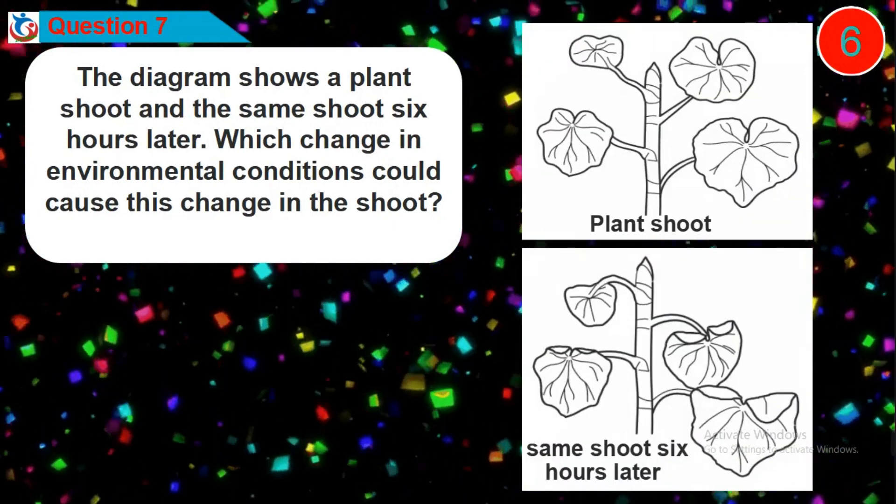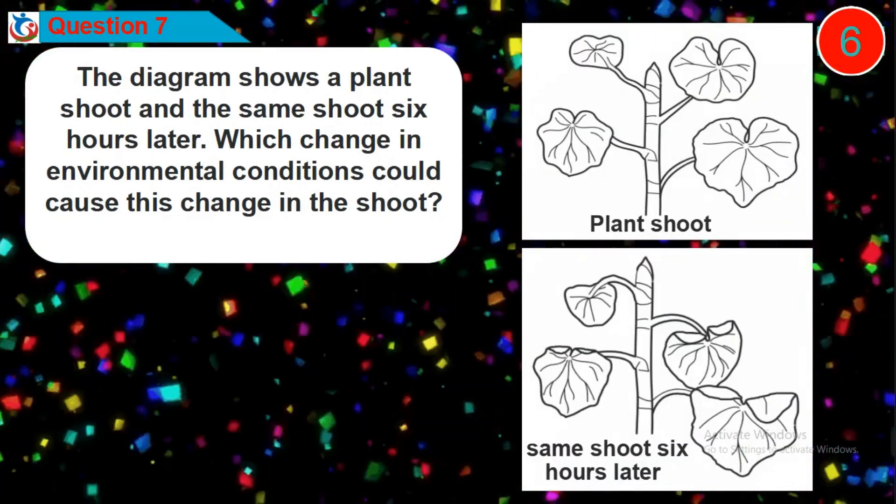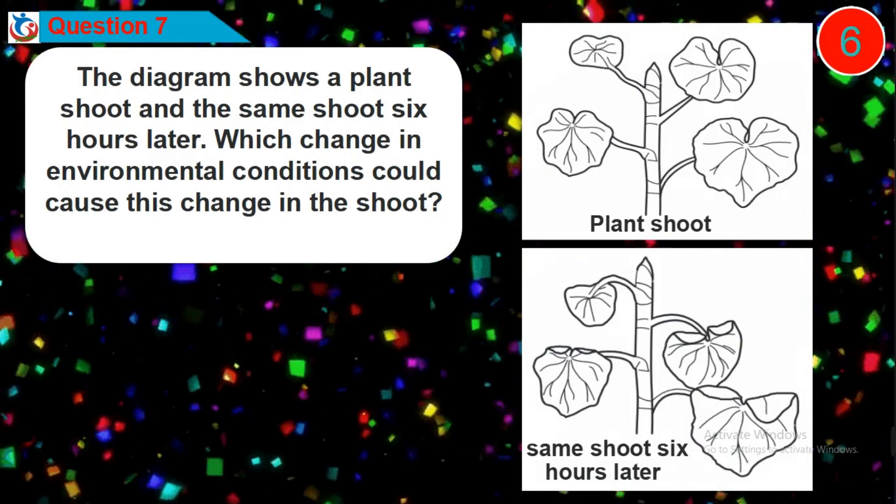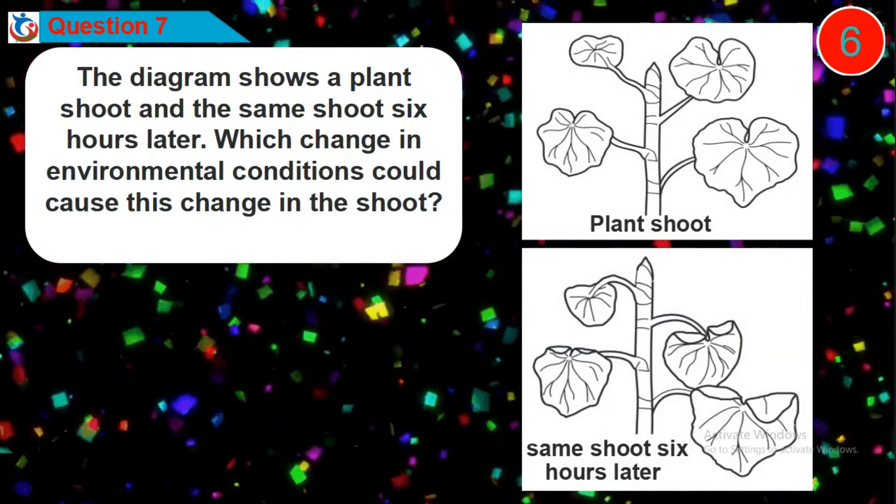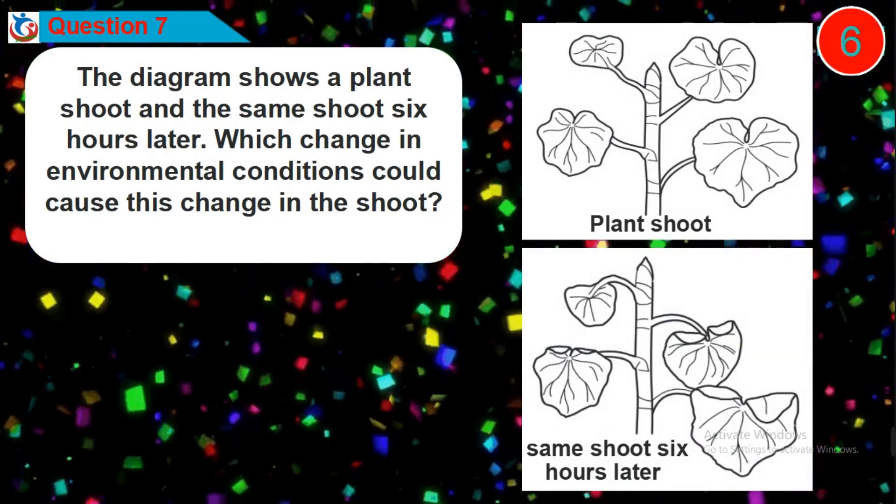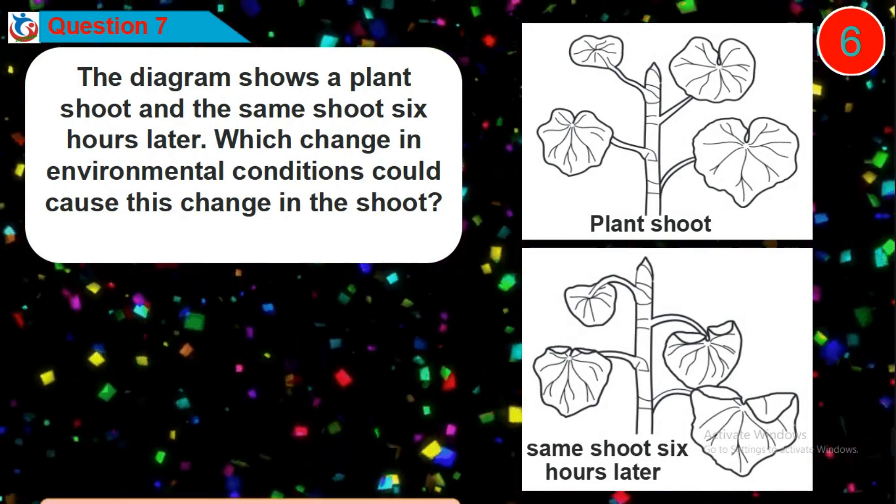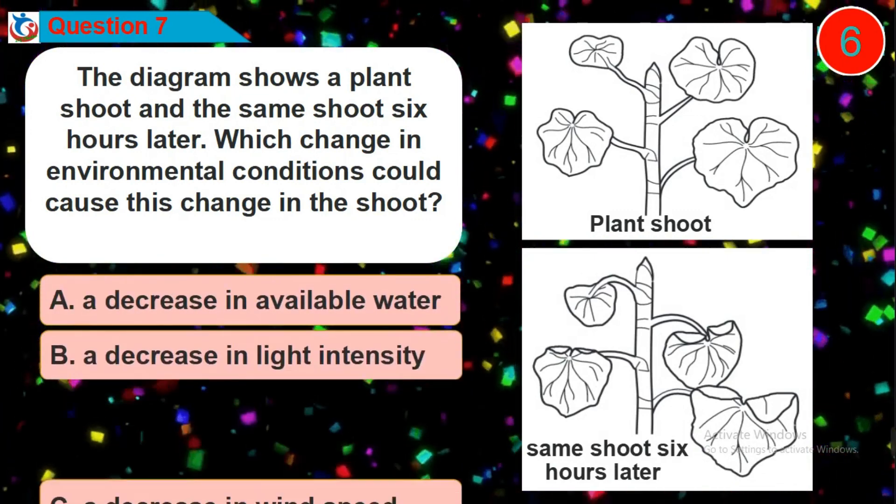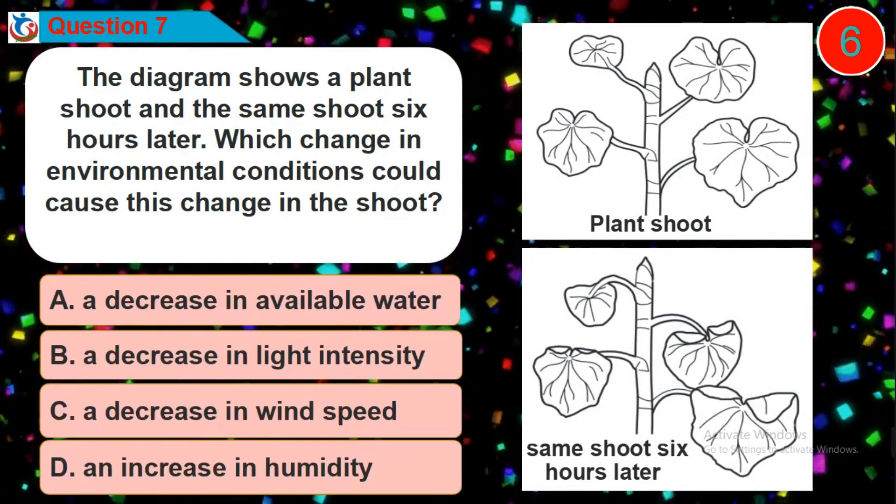The diagram shows a plant shoot and the same shoot 6 hours later. Is it option A, B, C or D?